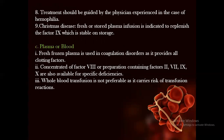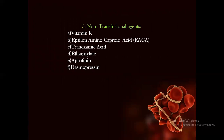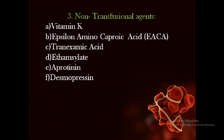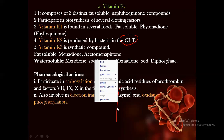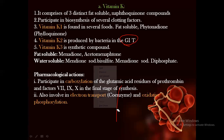Non-transfusional agents include vitamin K, epsilon-aminocaproic acid, tranexamic acid, ethamsylate, aprotinin, and desmopressin. Vitamin K exists in three distinct forms: fat-soluble naphthoquinone compounds including vitamin K1, found from dietary sources — it is fat-soluble phytonadione and phylloquinone; vitamin K2, produced from the GIT (synthesized in the intestine); and vitamin K3, a synthetic compound — a fat-soluble menadione. Water-soluble forms include menadione sodium bisulfate and menadione sodium diphosphate.